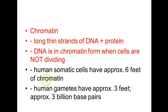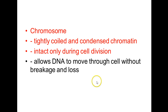Gametes — the egg cells and sperm cells — would have about half as much chromatin. Now, we have the term chromosome. A chromosome is the very same material as chromatin, but instead of being loose, uncoiled, long, thin threads, it is tightly coiled and condensed. Chromosomes exist only during cell division, and these tightly packed, short, condensed pieces of DNA allow the DNA to move around in the cell without a lot of loss and breakage.